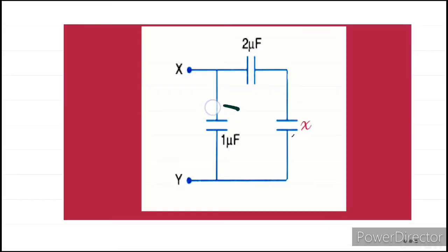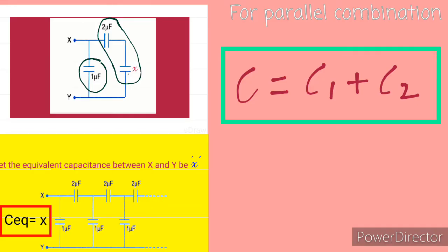We also see that the 2 and x series combination is parallel with 1 microfarad capacitor. So the equivalent capacitor for two capacitors in parallel is algebraic sum of the values of two capacitors, that is C1 plus C2.